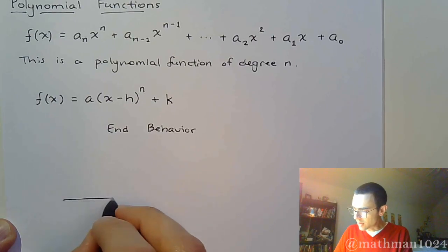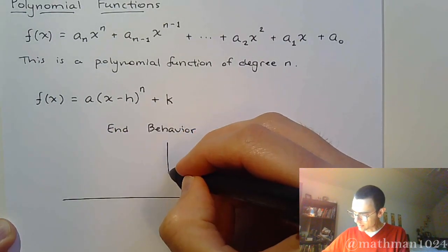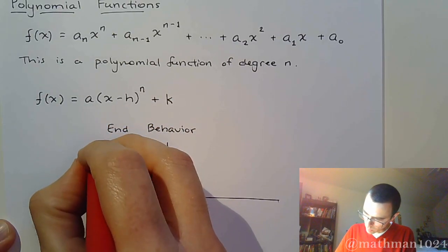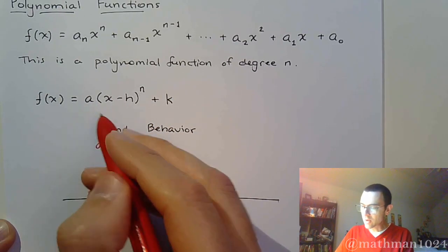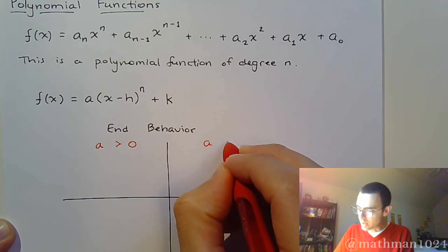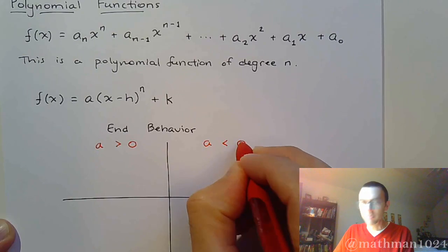So just make a little chart right here. And we're going to look at this, where we have, where this a right here, if it's positive, versus where that a value is negative.